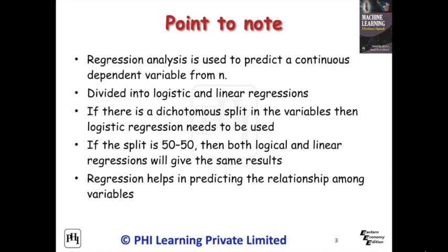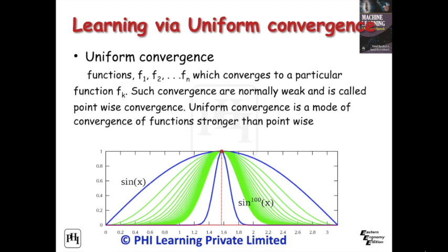One major misconception is that regression helps in predicting the relationship among variables. That is, if X predicts Y, then it is not valid to say X caused Y. Consider there are N number of functions F1, F2, ... Fn which converge to a particular function Fk. Such convergence is normally weak and is called pointwise convergence.